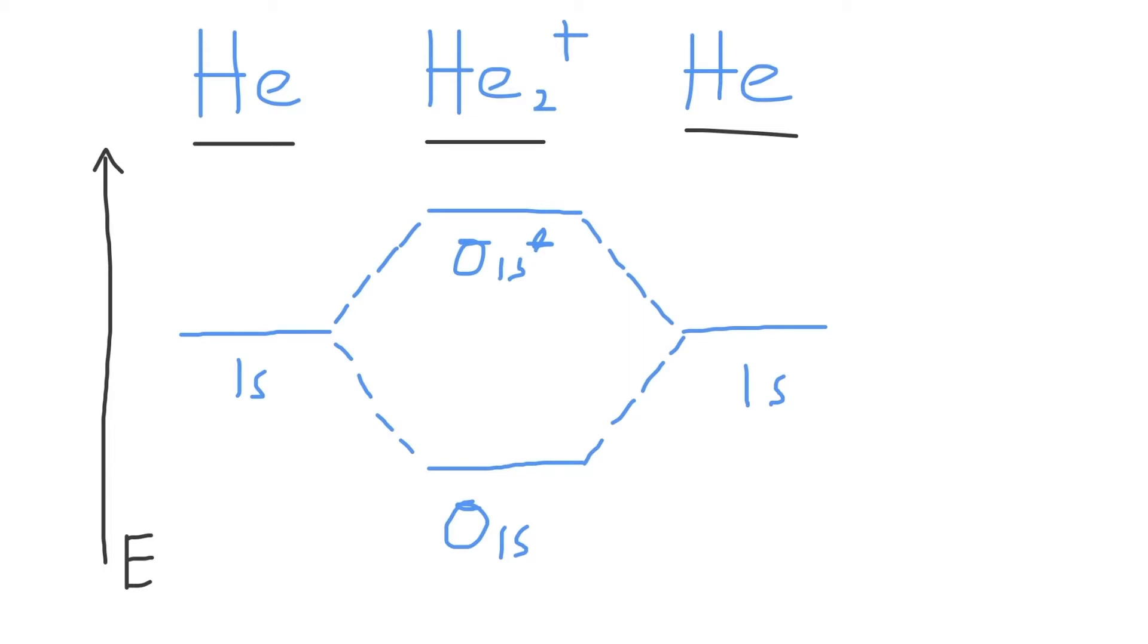Then, we need to figure out how many electrons, or more precisely, valence electrons, are present in each individual helium. For a normal helium atom, it has two valence electrons.